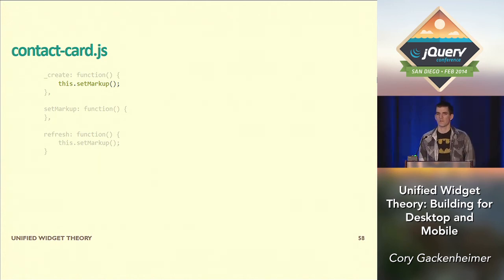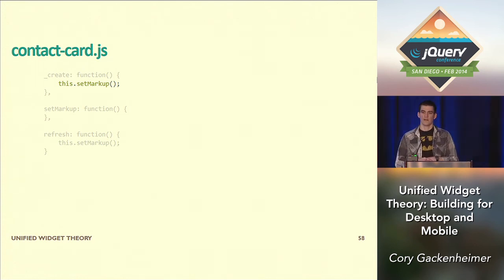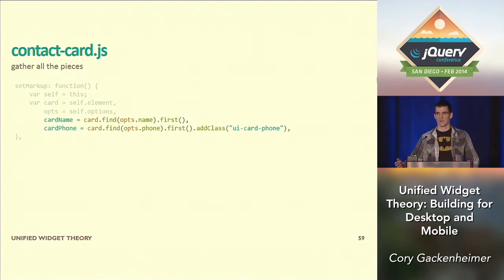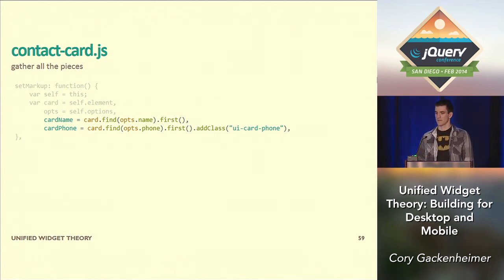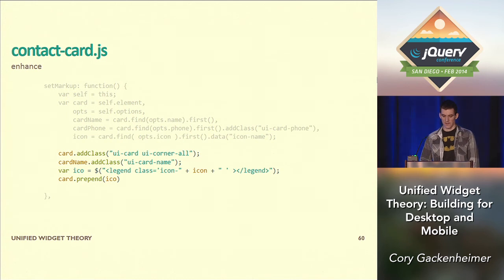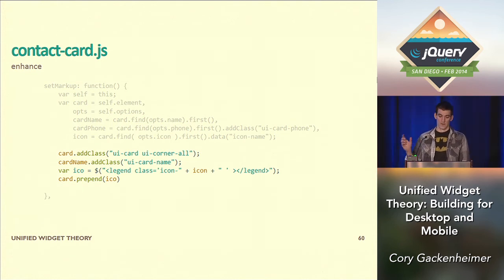I have a few methods: 'create' and 'refresh', both calling 'set the markup', which manipulates the widget to look as I want. Create is the initial creation, and refresh is for dynamically built widgets that need to rebuild. Inside that function, I gather all pieces based on the selectors in the default options — finding the name, phone, and other parts. I'm already adding a class to the phone number, and then the rest of the method marks up the card, adds the name, and grabs an icon to put at the top.